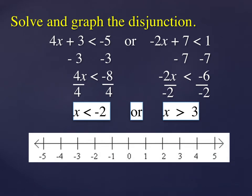So what would this look like? X is less than negative 2, open circle and everything to the left, or X is greater than 3.